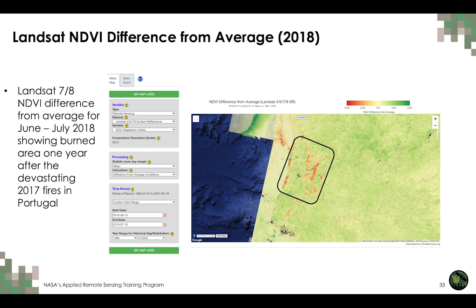Satellite imagery still detects low NDVI values one year after the devastating 2017 wildfires. Using Landsat 7 and 8, we quickly run an analysis of the NDVI difference from average from June to July 2018, compared to average NDVI values for this region from 1984 to 2020. We can still see the impact of the wildfires in central Portugal, and this analysis can be run over subsequent years to determine the rate of regrowth and recovery in forest cover.